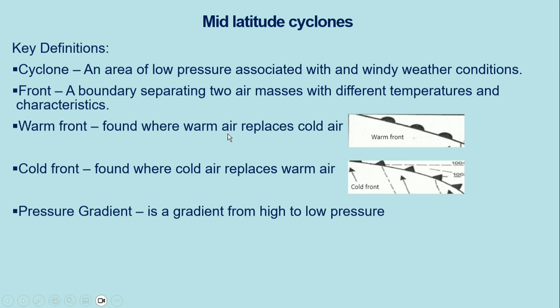A warm front is an area where warm air replaces cold air, whereas a cold front is an area where cold air dominates the warm air. We also talk about pressure gradient, which is basically the difference between a high and a low pressure cell. This is what represents your warm front and this is how we see a cold front on a synoptic weather map.